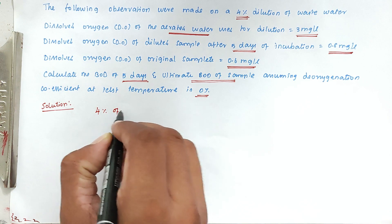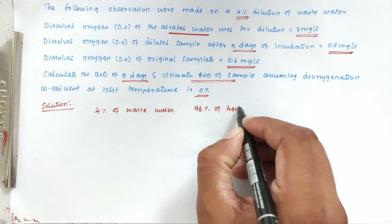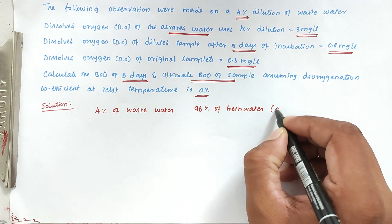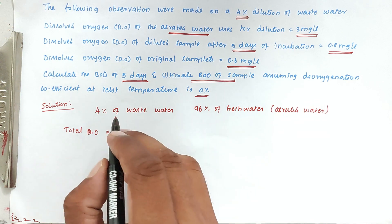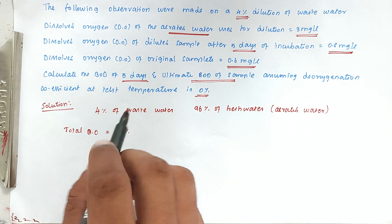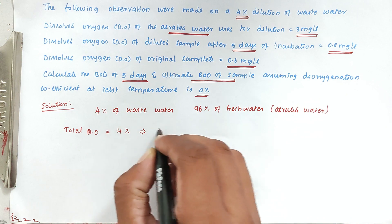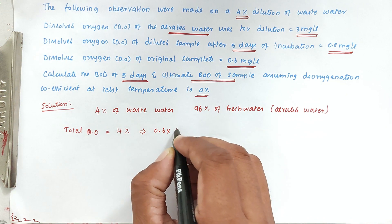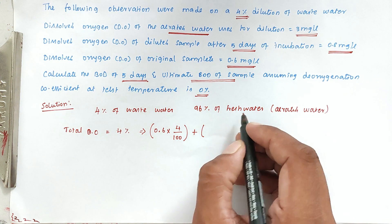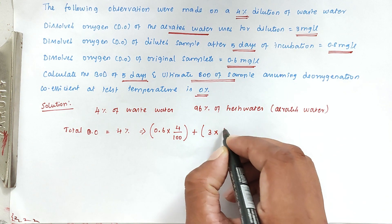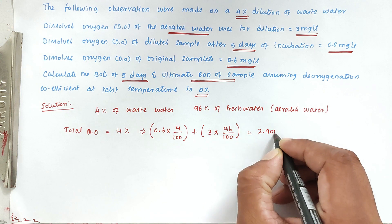We take 4% of waste water and 96% of fresh aerated water. The total dissolved oxygen at the initial stage is calculated as: 0.6 mg/L × (4/100) from the waste water, plus 3 mg/L × (96/100) from the fresh aerated water. Solving this, we get total dissolved oxygen = 2.904 mg per litre. This is the dissolved oxygen present before 5 days of incubation.